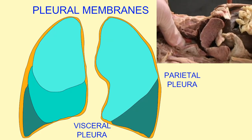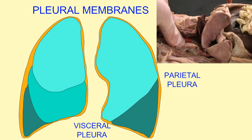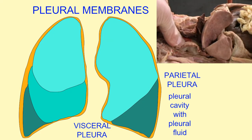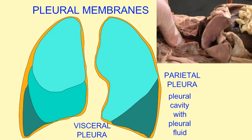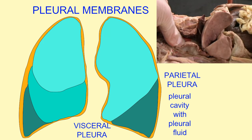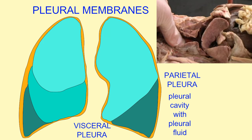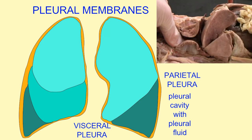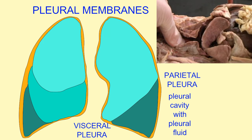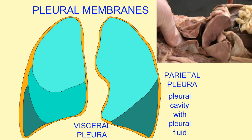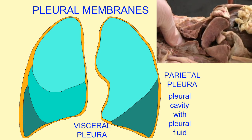Between these two surfaces a pleural cavity exists which holds a lubricating pleural fluid, which allows the lungs to be constantly in motion without developing blisters and adhesions.